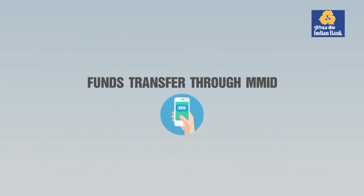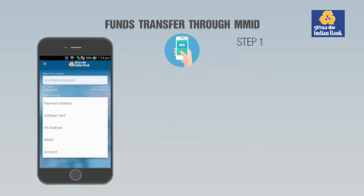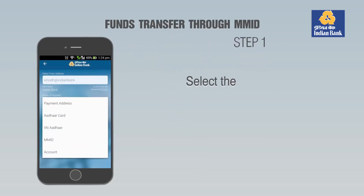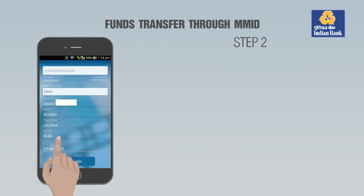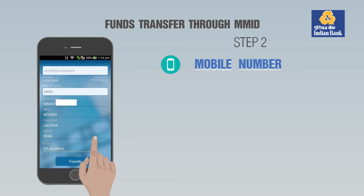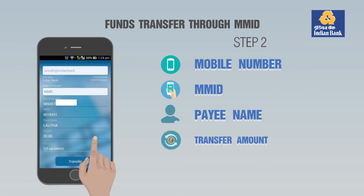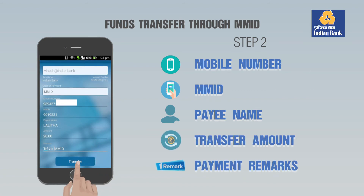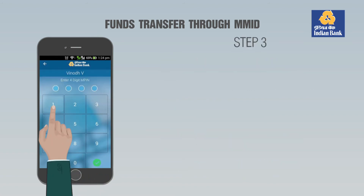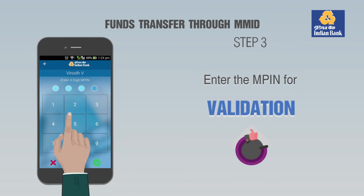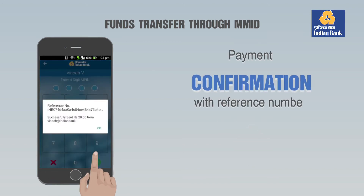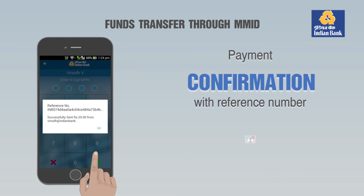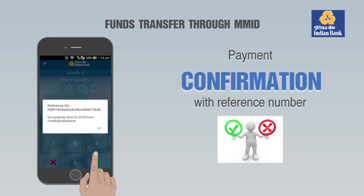Funds Transfer Through NMID. Step 1: Select the Payment Option NMID. Step 2: Enter the Mobile Number, NMID, Payee Name, Transfer Amount and Payment Remarks. Step 3: Enter the N-PIN for validation. Payment confirmation with reference number and success or failure message will be displayed.